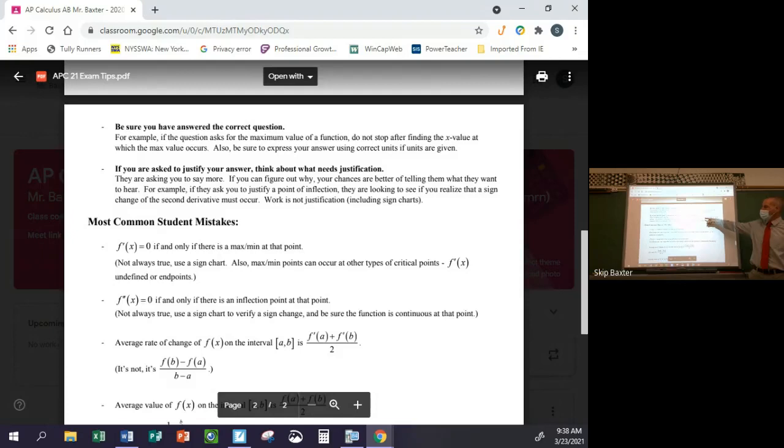If you're asked to justify your answer, think about what they're looking for. And every time we go over a free response question, I try and emphasize this. Like, what are they looking for you to say? Like, if they're looking for the intermediate value theorem, then they're looking for certain things. They're looking for is the function continuous and the word intermediate value theorem. That's the two things that they're going to be looking for in that question.